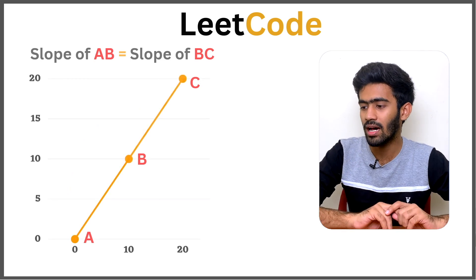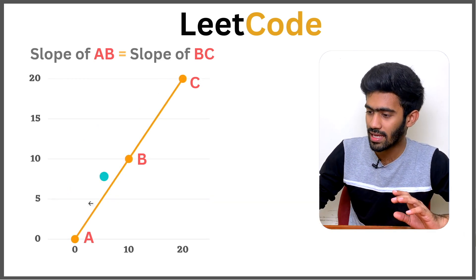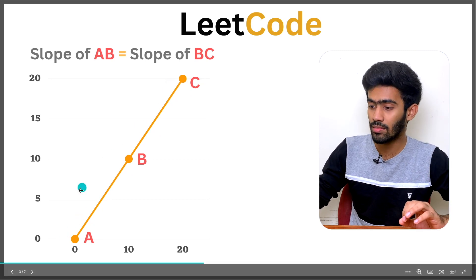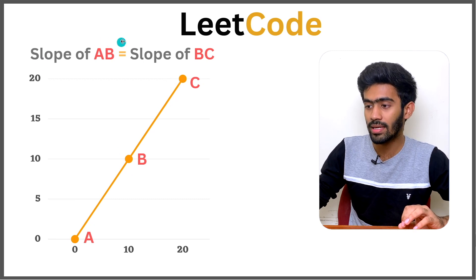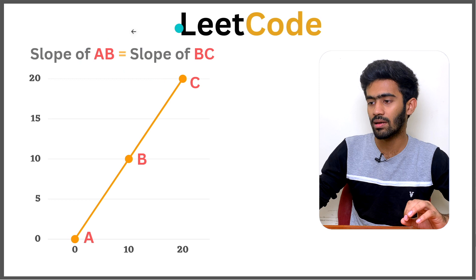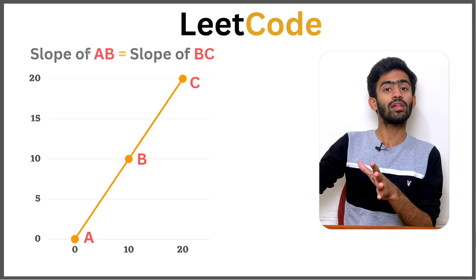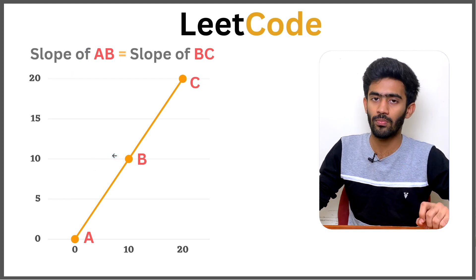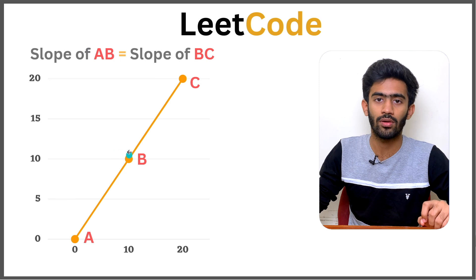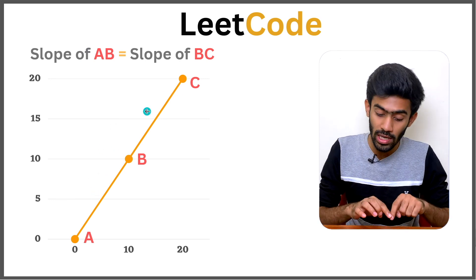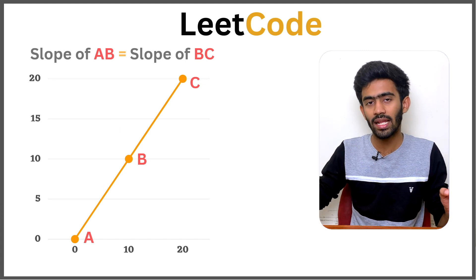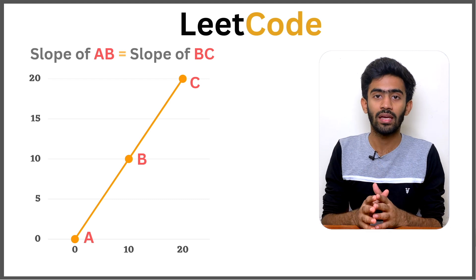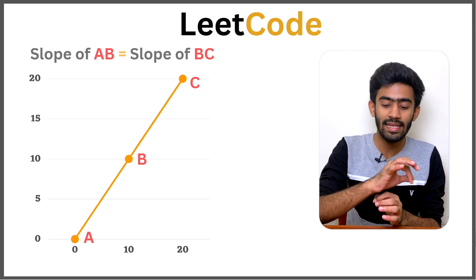If we look at a graph with three points on a straight line, the slope of AB is equal to the slope of BC. This is the collinearity check. So for the first two points we compute the slope, and for the second two points we compute the slope. If the slopes are equal, all three points are on one line; if not, they are not collinear.